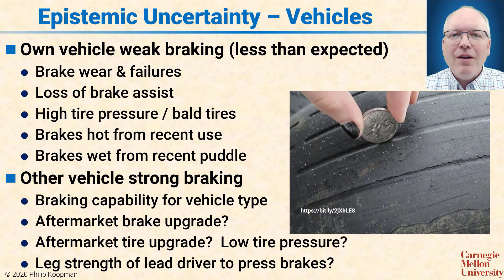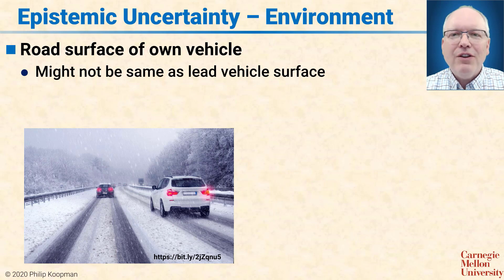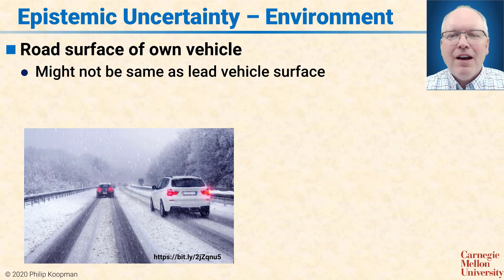The lead vehicle might have exceptionally strong braking — it might have upgraded, non-factory brakes or non-factory tires that brake much more effectively than you would have expected for that type of vehicle, if you can even figure out which type of vehicle it is that you're following. There's also uncertainty about the environment. The road surface under your vehicle might be different than the road surface under the other vehicle. For that matter, the road surface under your vehicle might change dramatically from minute to minute. For example, in a snowy scene, the lead vehicle might have its wheels where the pavement has been cleared and is wet but not frozen. If your vehicle is a few inches to one side, you might be on ice and be able to stop a lot less effectively than the vehicle in front. You're on the same roadway, traversing the exact same ground, but a few inches to one side might make a factor of two or three difference in the coefficient of friction.